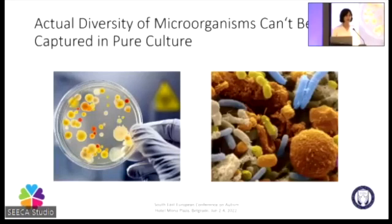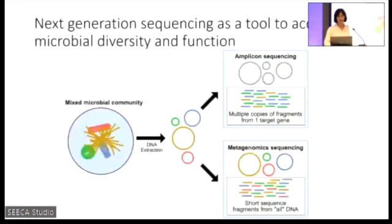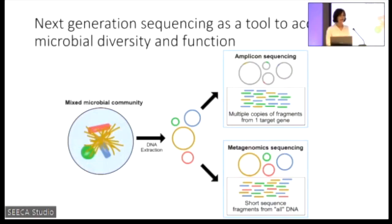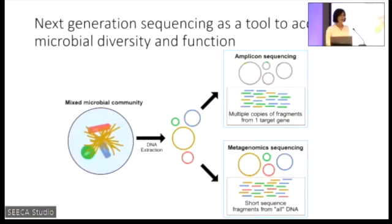To tackle this, we have four different approaches: a DNA approach, an RNA approach, a protein-based approach, and a metabolite-based approach. I'm only going to talk about the DNA approach, because this is what we used in our study. We go to the environment and isolate total community DNA — in the case of the human gut, this is a conglomerate of human cell DNA and microbial cell DNA. We then use a pathway called amplicon sequencing, where we amplify a very special gene called the 16S rRNA gene.